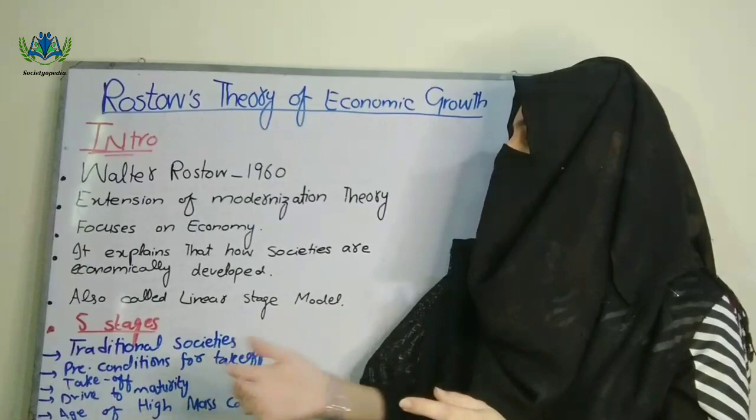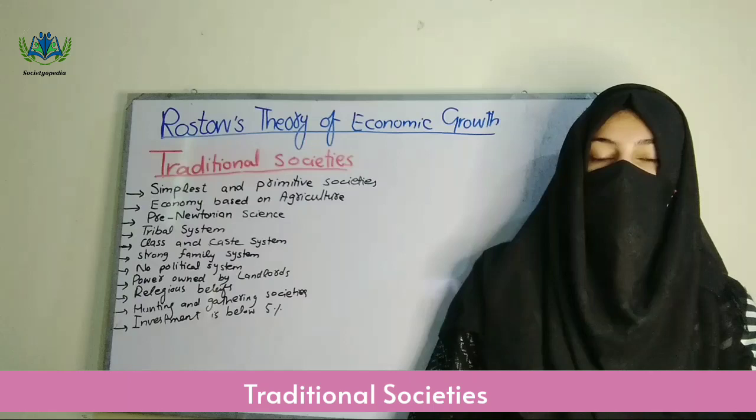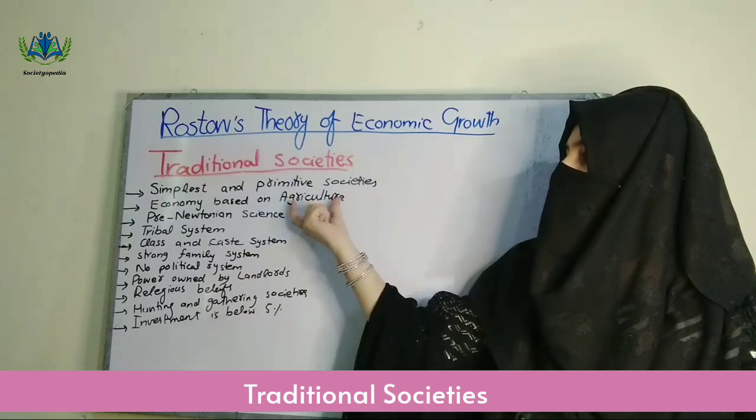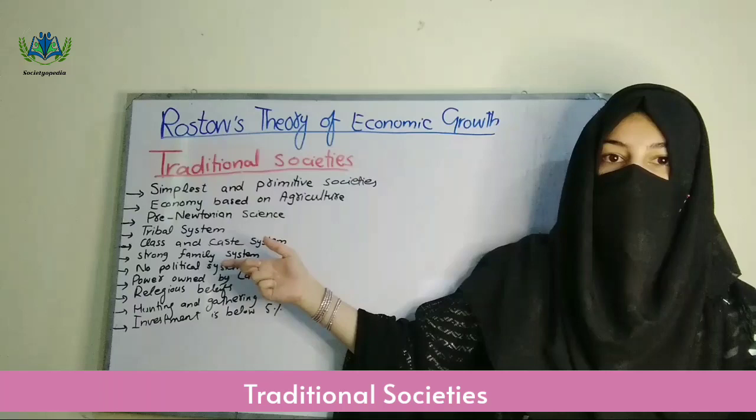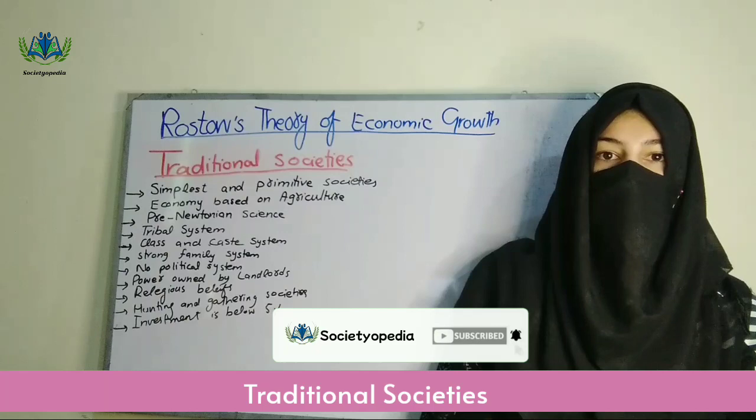The first stage of Rostow's theory is traditional societies — simple and primitive societies. Here the economy is agriculture-based, and 75 to 80% of the people depend on agriculture.